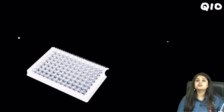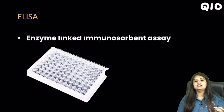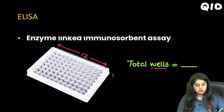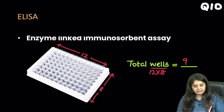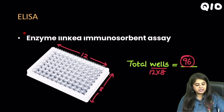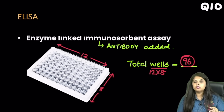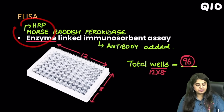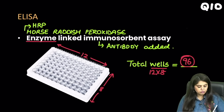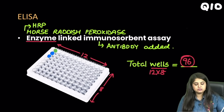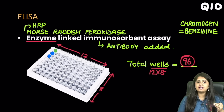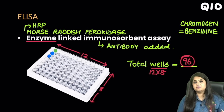Coming to the last question — everyone's favourite, the ELISA plate. Enzyme linked immunosorbent assay. The first question: total number of tests that can be done — total wells. On one side we have 12 wells, on the other 8 wells, so 12 × 8 = 96 wells in an ELISA plate. Reading the full form: immuno means an antibody is added, enzyme means an enzyme is added — that enzyme is HRP, horse radish peroxidase. In the end, the plate gives a colour to show whether the test is positive or not, and the chromogen added for this is usually benzidine. Types of ELISA will be taught in the immunology class.